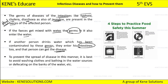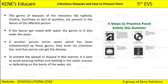To prevent the spread of disease through water, it is best to avoid washing clothes, bathing in water sources, or defecating on the banks of water. Many people still don't use washrooms and go near rivers or agricultural land to defecate, causing many infectious diseases. We must not wash clothes in water bodies, take bath in water bodies, or defecate on the banks of water.